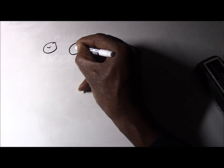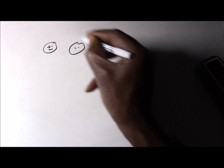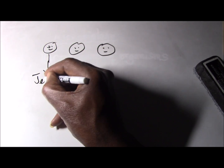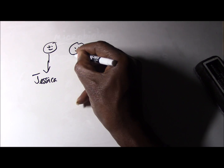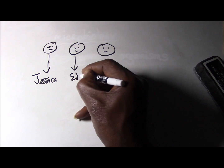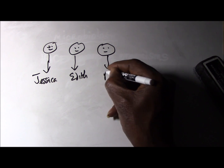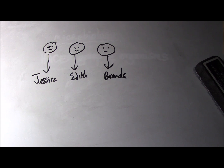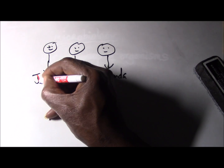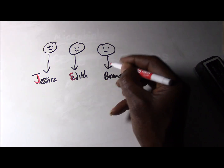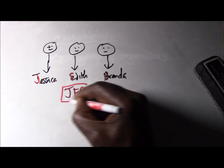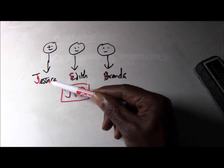That scenario is this: suppose you have three sisters or three daughters, and their names are Jessica, Edith, and Brenda. Now you decide to form an acronym using the first letter of each of these, so you have J, E, and B — giving you JEB.